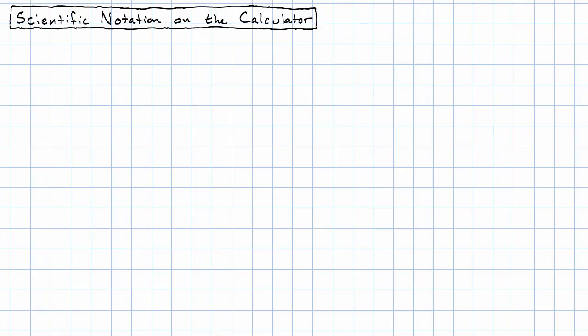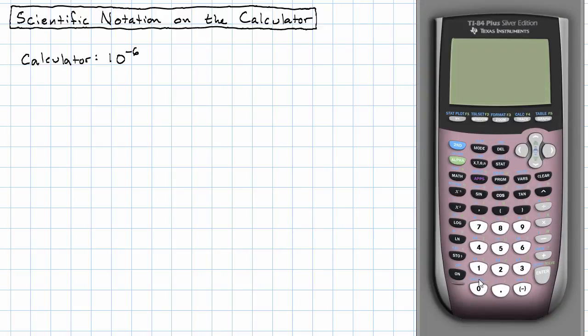One of the most common times that the calculator produces an answer in scientific notation is when it's producing a very small number. For example, when we go to our calculator and put in 10 to the negative 6, the calculator says 1, a capital E, negative 6. What the calculator means by that is 1 times 10 to the negative 6. This is scientific notation. The number before the E is the significant and the number after the E is the magnitude.